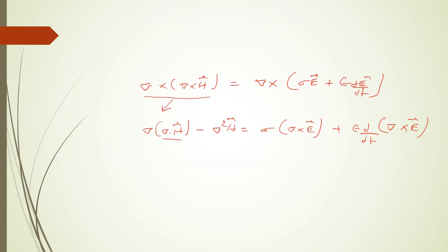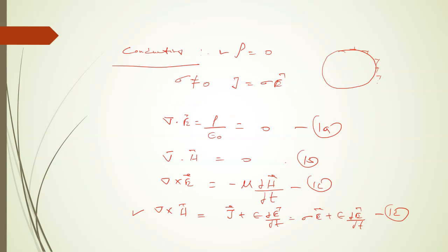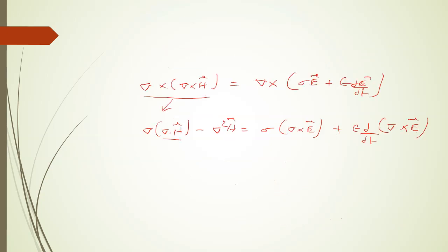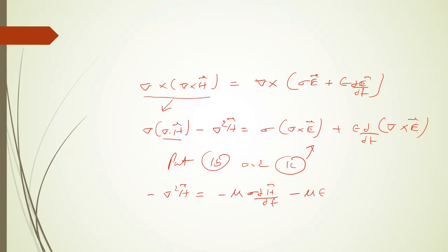So we have del times del dot H minus del squared H equals sigma del cross E plus epsilon times d over dt of del cross E. Now, by equation 1b, del dot H equals zero. And by equation 1c, del cross E equals minus mu times partial H over partial t. Substituting equations 1b and 1c into the above equation, we get minus del squared H equals minus mu sigma dH over dt minus mu epsilon times d over dt of partial H over partial t.